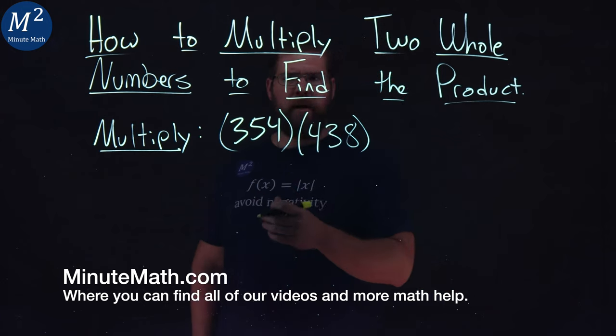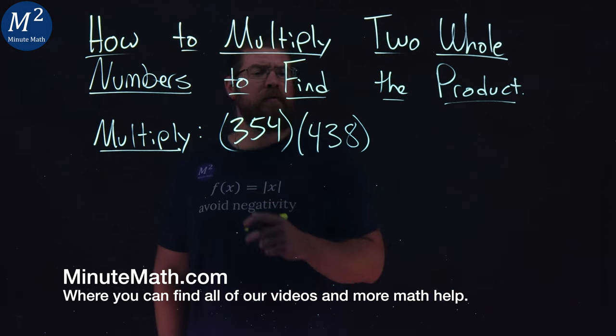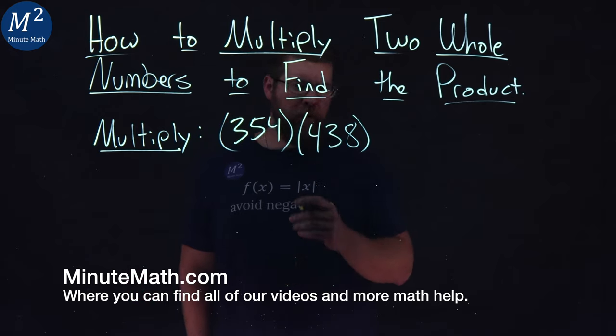We're given these two numbers, three-digit numbers: 354 times 438. We're going to multiply them.